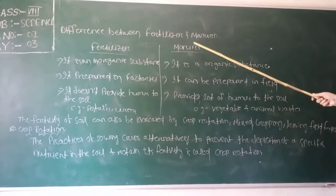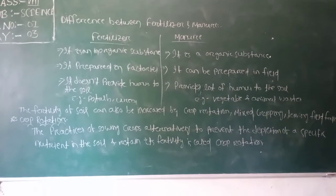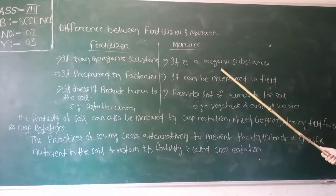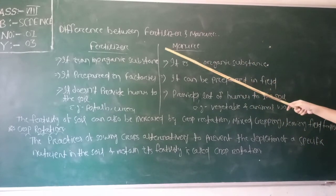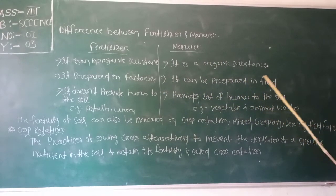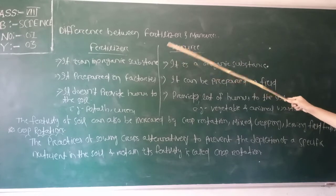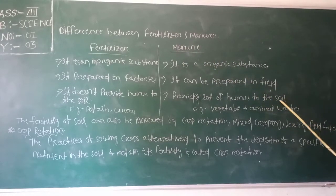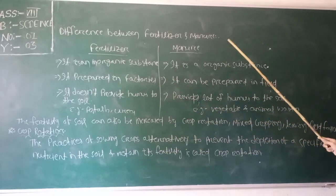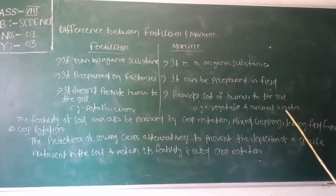What are the differences between fertilizer and manure? Fertilizer is an inorganic substance or inorganic salts, while manure is an organic substance. Fertilizers are prepared in factories, whereas manure is prepared in the field. Fertilizers do not provide humus to the soil, but manure provides a lot of humus. Examples of fertilizers are urea, potassium sulfate, etc. Manure is obtained from the decomposition of vegetable and animal matter.